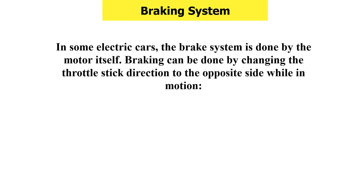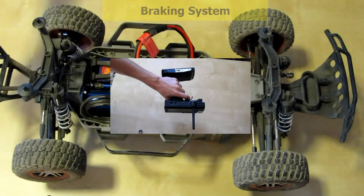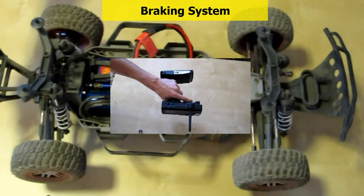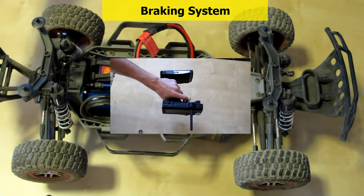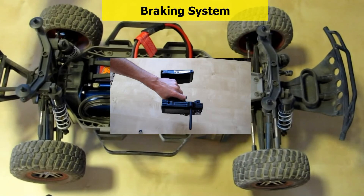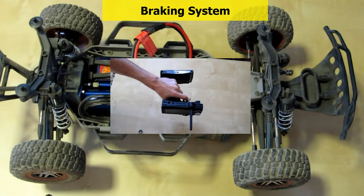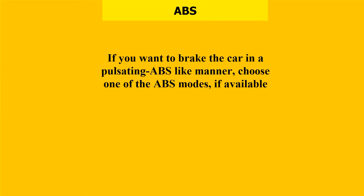In some electric cars, the brake system is done by the motor itself. Braking can be done by changing the throttle stick direction to the opposite side while in motion. If you want to brake the car in a pulsating ABS-like manner, choose one of the ABS modes, if available.